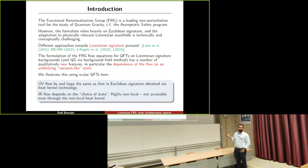Let me tell you what the results are. If this vacuum-like state is chosen appropriately, the UV flow is expected to be by and large the same as that in Euclidean signature, obtained via the usual heat kernel technology. On the other hand, the flow in the infrared of the RG scale depends on the choice of state, and this is highly non-local — it's not even accessible through the non-local heat kernel — and I will present an explicit example of that.